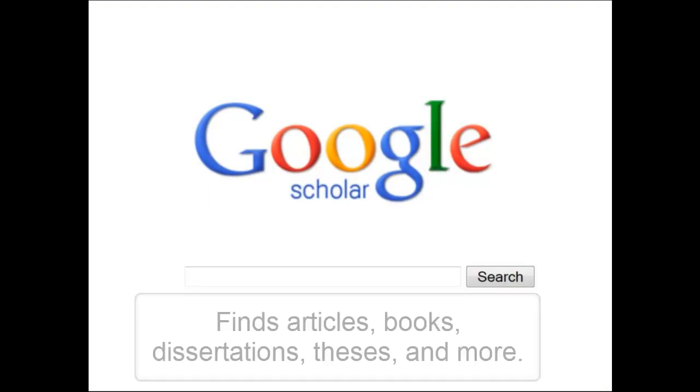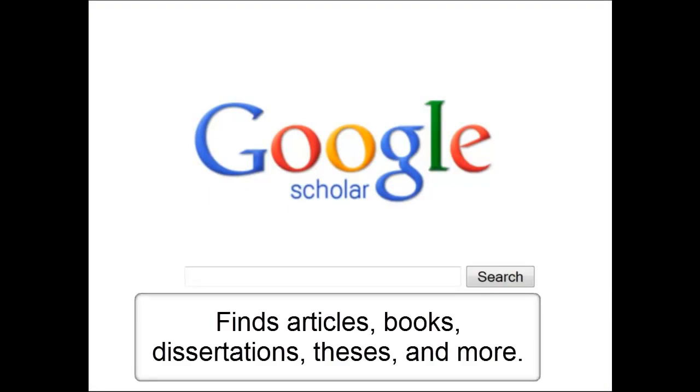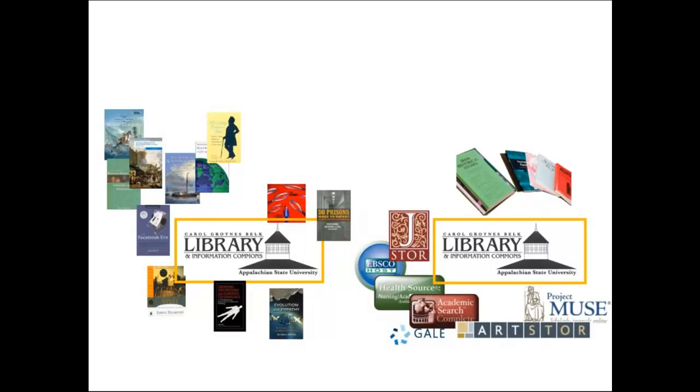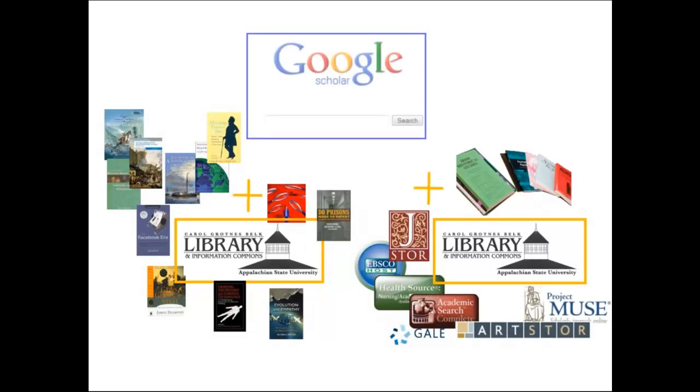Google Scholar locates references to academic journal articles, books, theses, and other scholarly content. But often, only an abstract is available for your results. Fortunately, we can combine Belk Library's large full text book and journal collections with the power of Google Scholar's search engine.